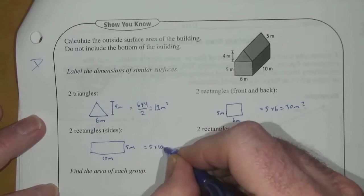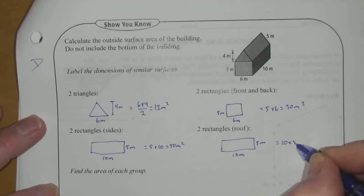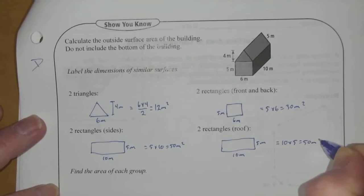This one, it's 5 times 10, or 50 meters squared. And again, 10 times 5, or 50 meters squared.